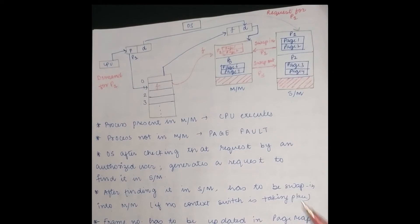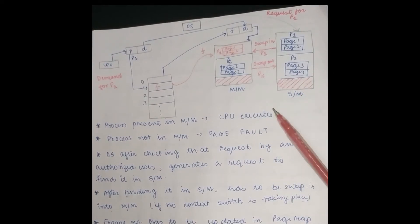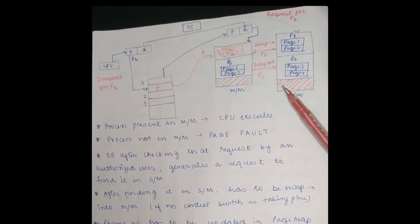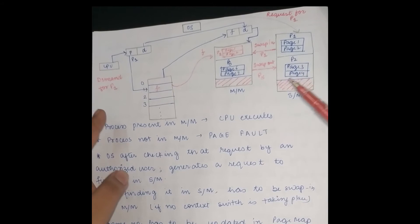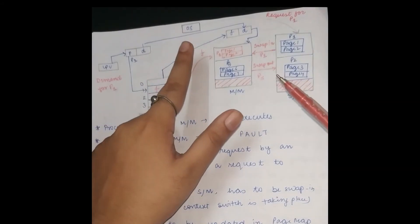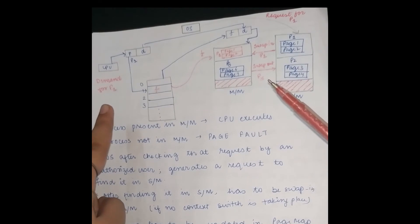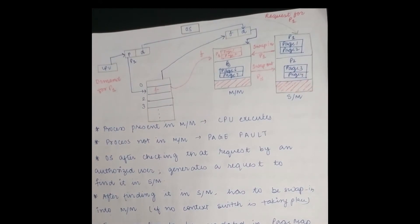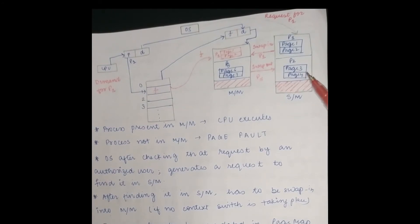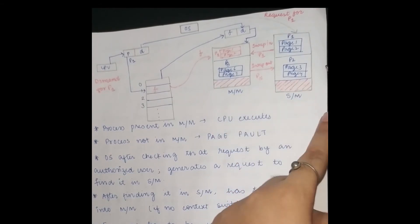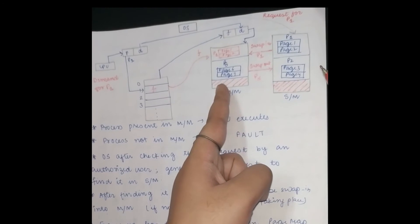An important point is that secondary memory can only swap in or swap out pages that do not belong to an unauthorized user. If the CPU demands a process, the OS will first check whether that access is authorized. If it is an unauthorized user, there will be a trap. If it is authorized, the OS will go to secondary memory and request that the demanded process be swapped into main memory for execution.